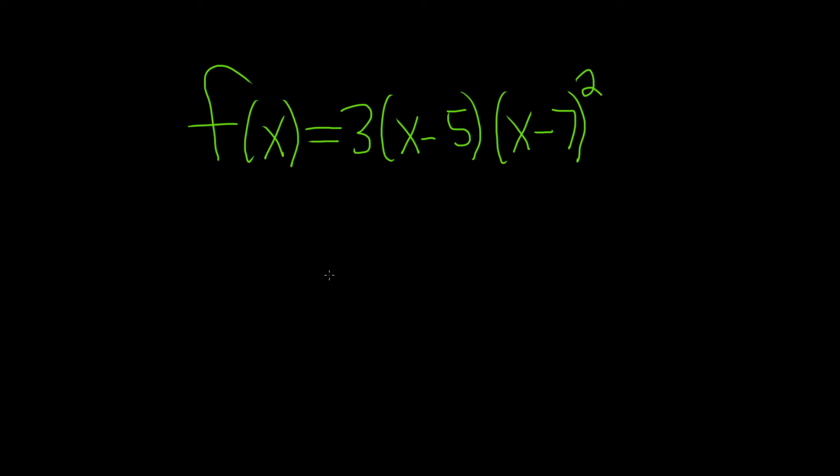In this problem, we have to find the zeros of this function, find the multiplicity of the zeros, and then determine whether the graph touches and turns around at each zero or crosses the x-axis. Let's go ahead and work through it.